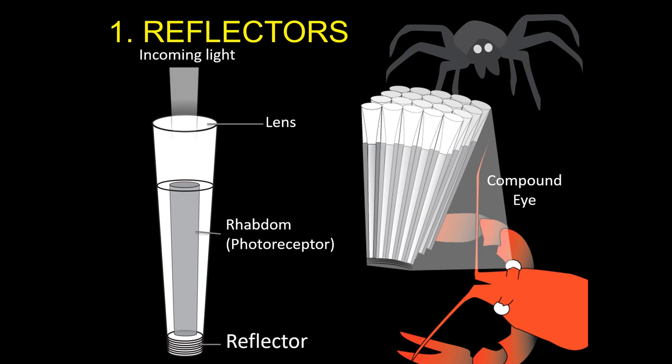If we look at just one unit of a crustacean compound eye, we see that light enters through the lens and passes through the light-sensitive photoreceptor, or rhabdom. When it hits the reflector at the back of the eye, a second dose of photons are reflected back onto the rhabdom, increasing the sensitivity of the eye and improving vision in the dark.